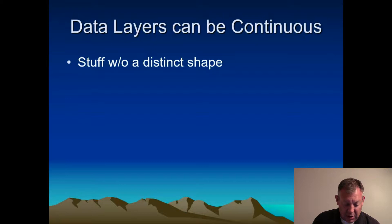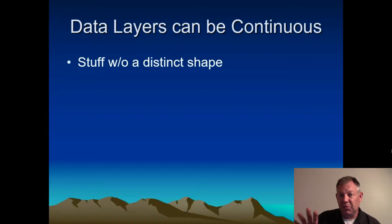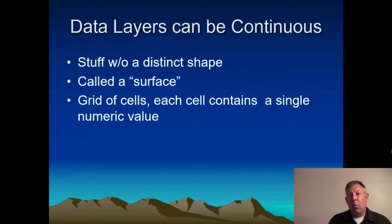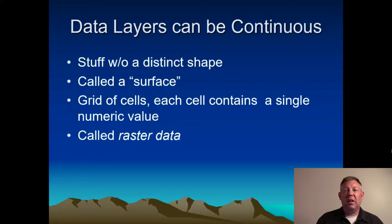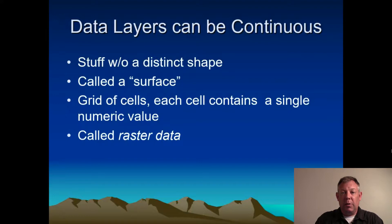You could also have data layers that are continuous — things that don't have a distinct shape — and we call these a surface. They don't have a distinct shape, but they're still very important as data layers. The way these are represented in the software is as a grid of equal-sized cells, and within each cell there is a single numeric value. We call this type of data raster data. You work with vector and raster data in different ways and each has its strengths and weaknesses, but we will definitely be using both types and they can work well together within the software.